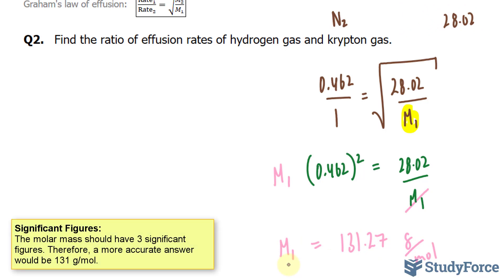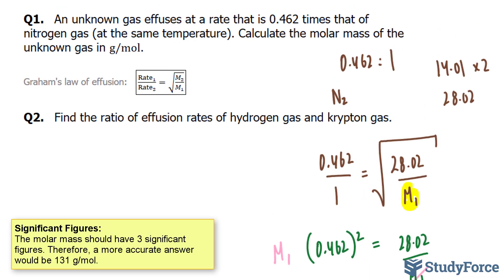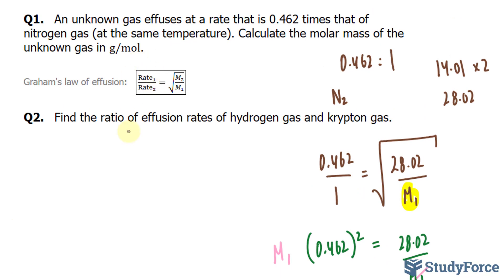In question number 2, we're asked: find the ratio of effusion rates of hydrogen gas and krypton gas. So we're looking for the left side.